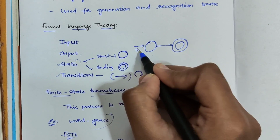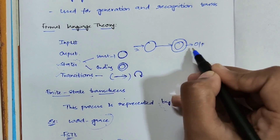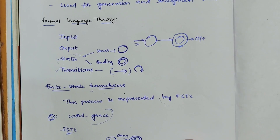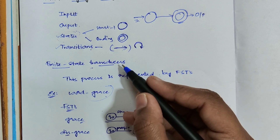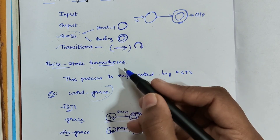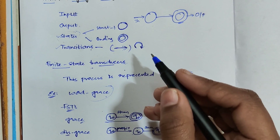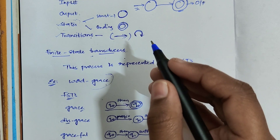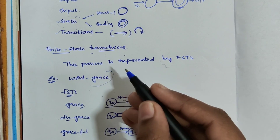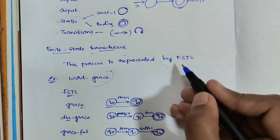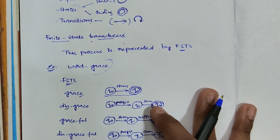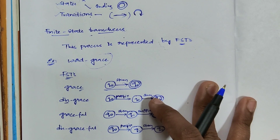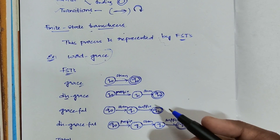This is nothing but a finite automata. Whenever you give some input it will produce output after reaching the end state. Now let me discuss about finite state transducers. The reason finite state transducers are relevant here is that whatever finite state morphological model we are using, that process is represented by finite state transducers. To get a clear understanding of this, let me go through an example.